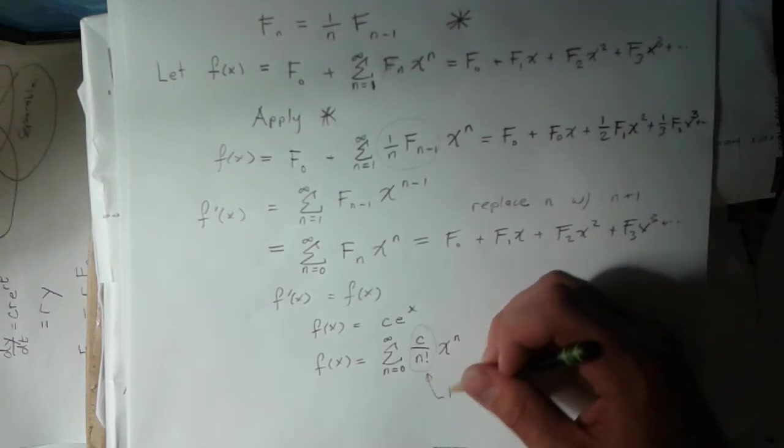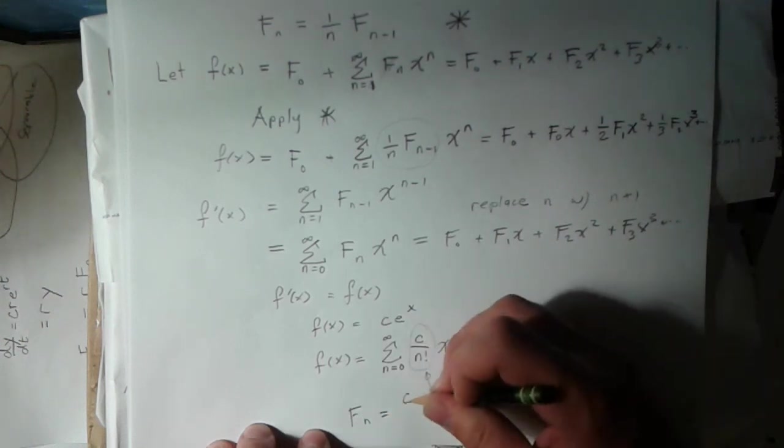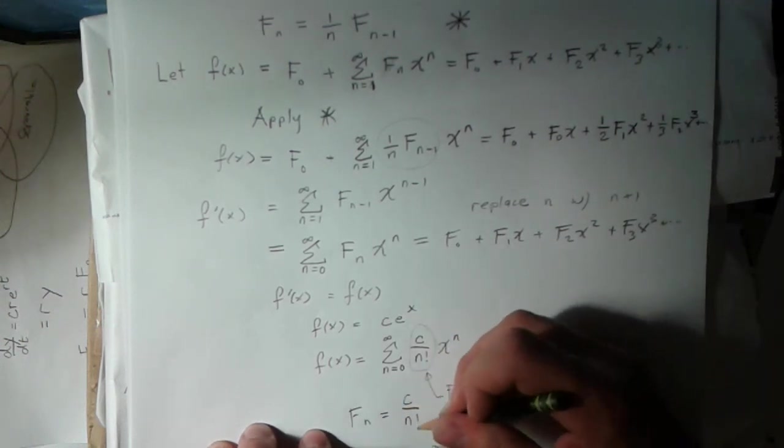This is just f sub n. So in other words, our solution is f sub n is equal to an arbitrary constant over n factorial. And you can find this exact same result by guessing.